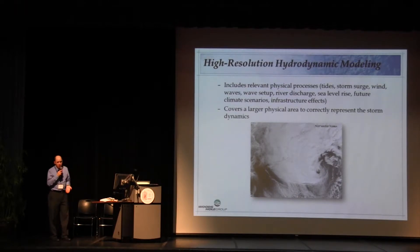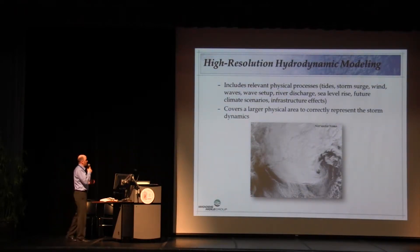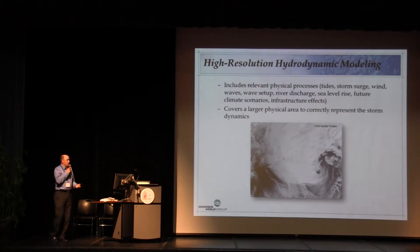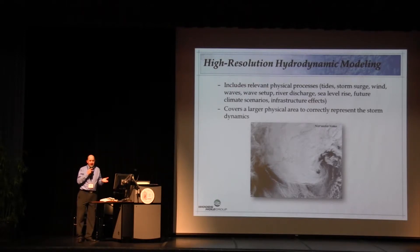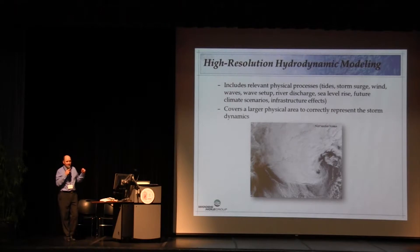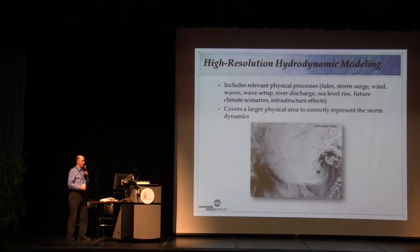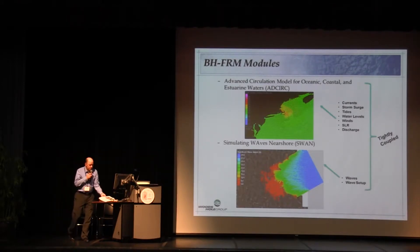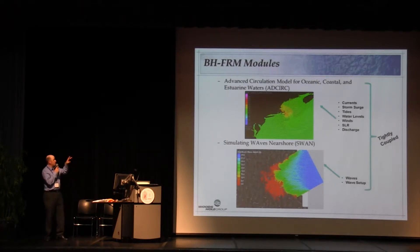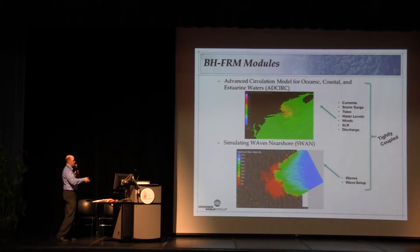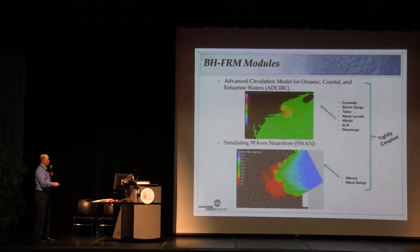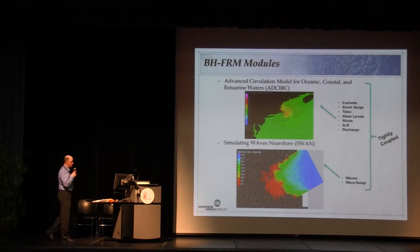There's a high-resolution hydrodynamic model, which is another type of map product — a little different. The difference is we start to include all these real relevant physical processes — the storms and all the things we've been talking about. The issue is it has to cover a large domain because these storms are big. Hurricanes are big, nor'easters are big — a lot of times they start way out in the middle of the Atlantic. What I'm going to talk about today is the development of the BHFRM model — the Boston Harbor Flood Risk Model. It has two components: the ADCIRC model, which handles storm surge, tides, sea level rise, and discharge down the Charles and Mystic Rivers, and that's tightly coupled with a wave model — SWAN — for waves. So it's got everything in there when you start to look at risk.